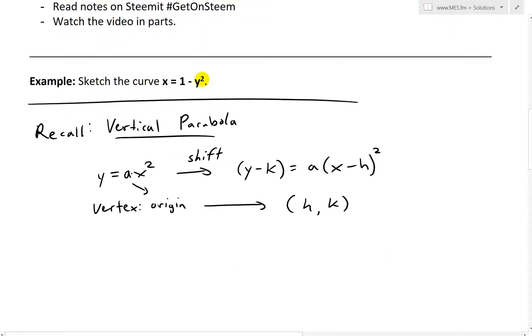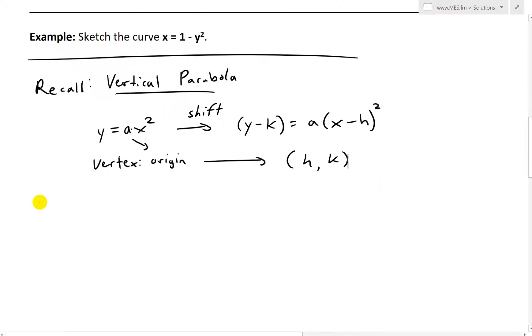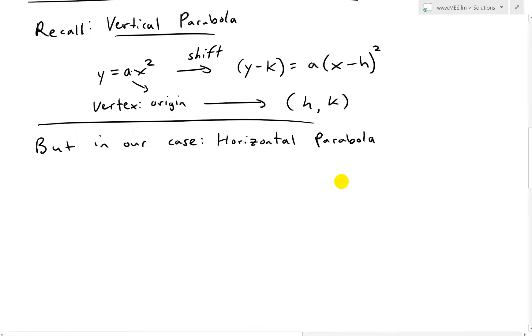But in our case right here, because we have the y squared, this one's x squared for the vertical one, but in our case we have a horizontal parabola. So what we have now is it would be the exact same thing, but you could think we're just shifting the axis. So now what we'll have is x equals a y squared, and then this shifts over to now we'll have x minus h equals a times y minus k squared.